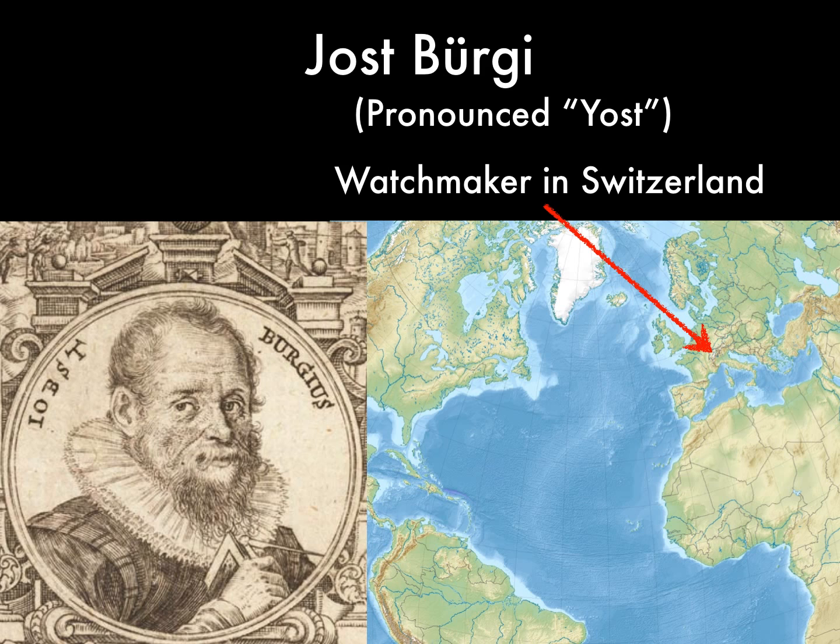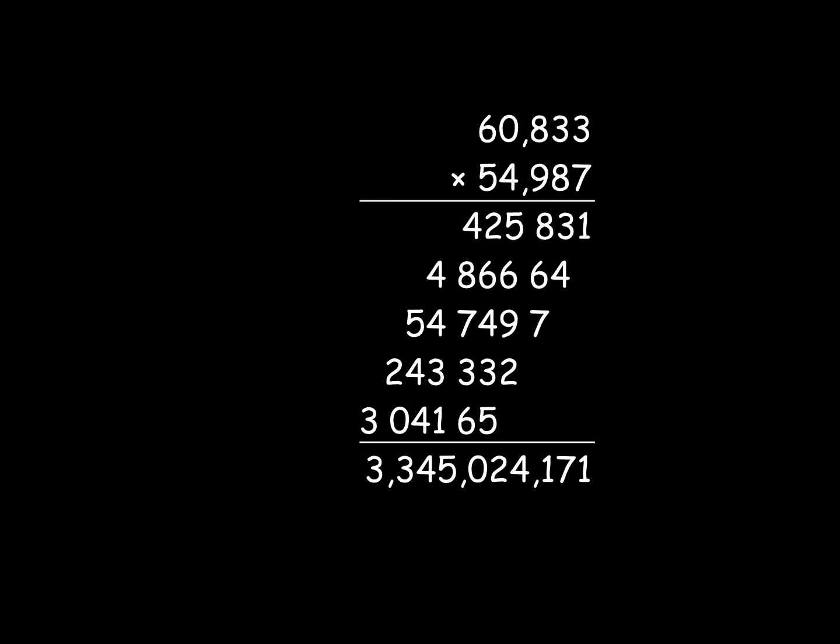He was actually more than a watchmaker. He was the instrument maker for the Royal Observatory there. He also helped with some of their mathematical calculations, and that often meant multiplying numbers with lots of digits. And after doing that for a lot of numbers, he had an idea how to make it easier.